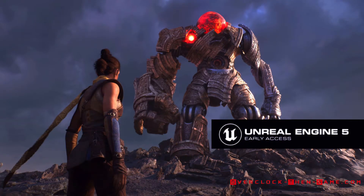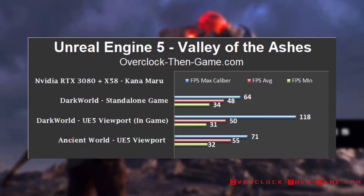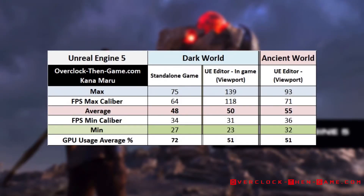Unreal Engine 5 is a 35 GB download, and Ashes of the Valley was a 100 GB download. However, once you load and unpack Ashes of the Valley within Unreal Engine, it expands to a whopping 206 GB. In this benchmark suite, I benchmarked the viewport frames per second and the standalone frames per second. In the standalone game, I averaged 48 FPS. In the editor while playing, I averaged 50 FPS, and while moving around the scene in the editor, I averaged 55 FPS. The RTX 3080 isn't breaking a sweat, coming in at only 51% average GPU usage in the UE5 editor and 72% on average while playing the standalone game.